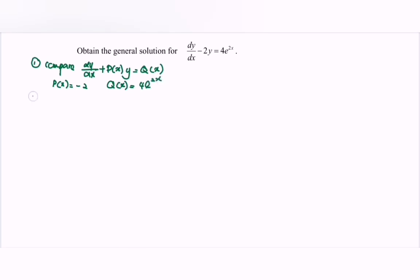Second step, find the integrating factor where we have the equation e^(∫p(x)dx). So in here we have the equation e^(∫-2dx). So we will have e^(-2x). So that is the integrating factor.